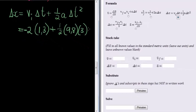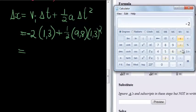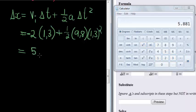Change in time is, sorry, not 3 seconds, 1.3 seconds squared. We use our calculator. Negative 2 times 1.3 plus a half times 9.8 times 1.3 squared. That gives me 5.881 meters.